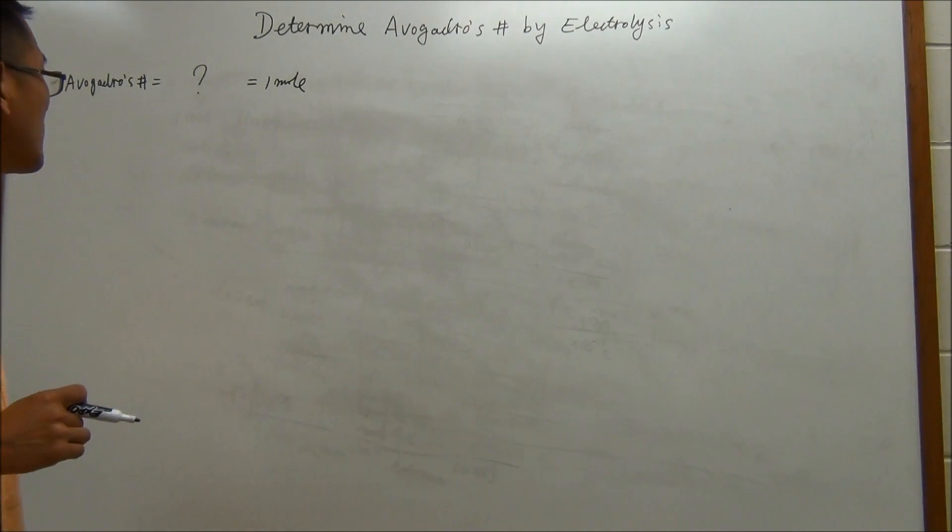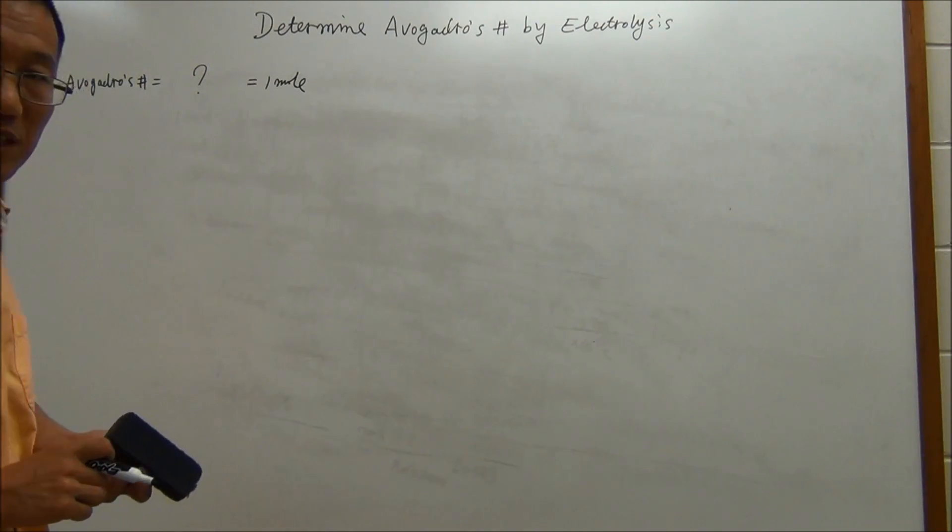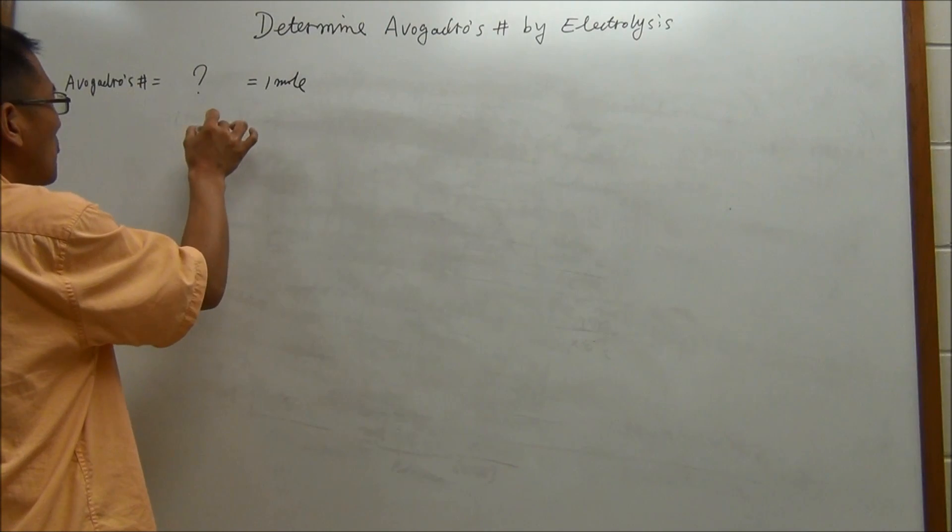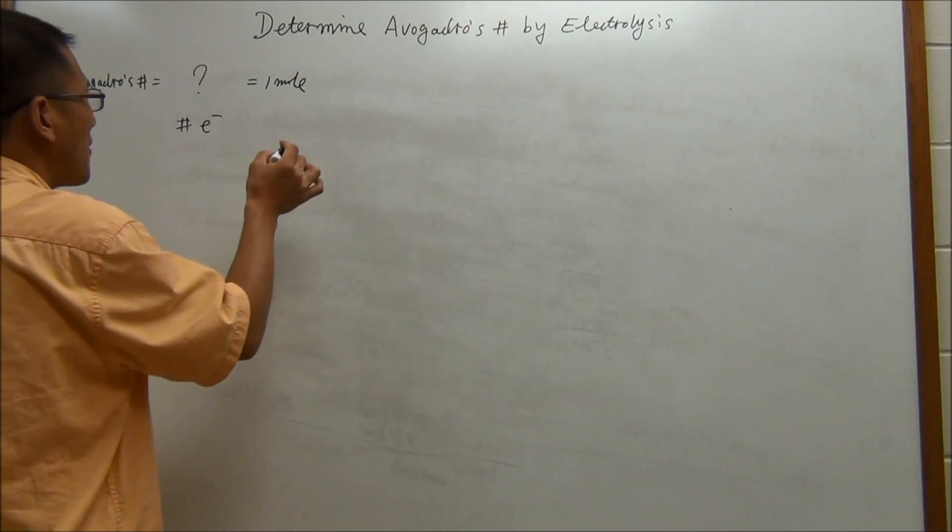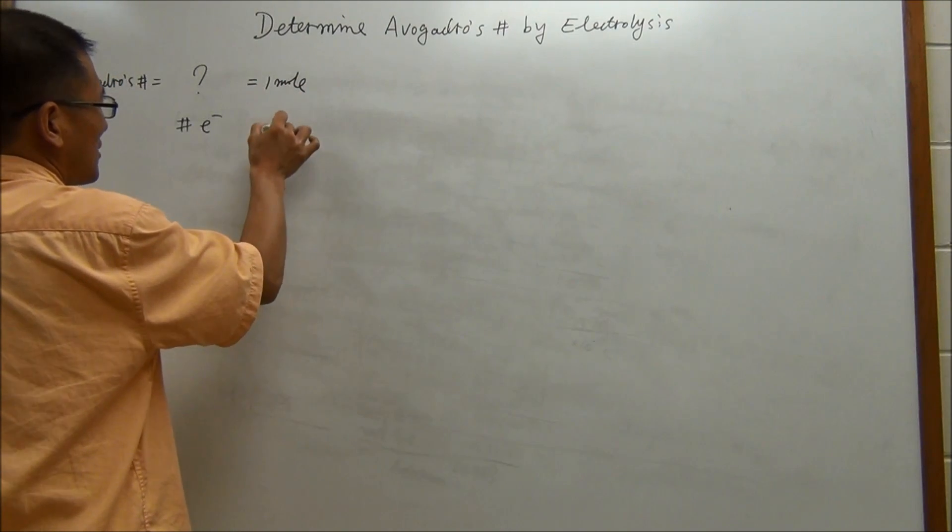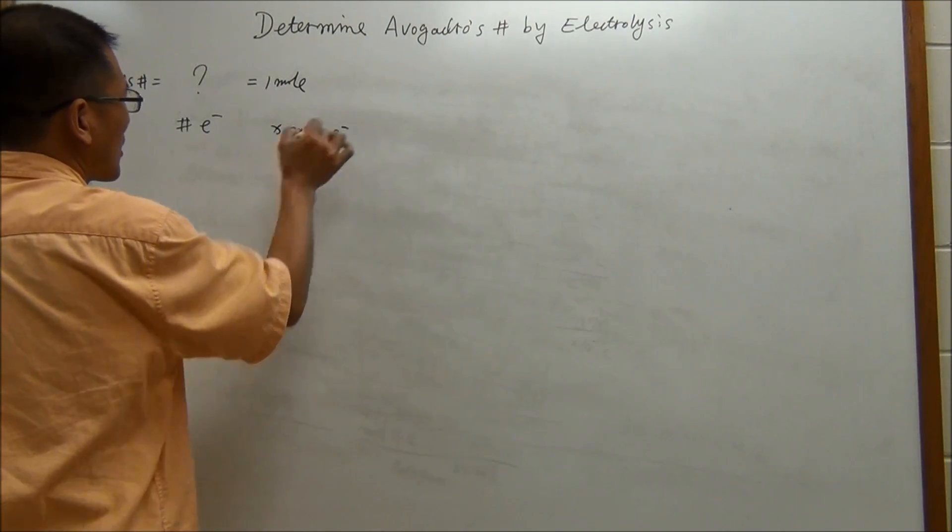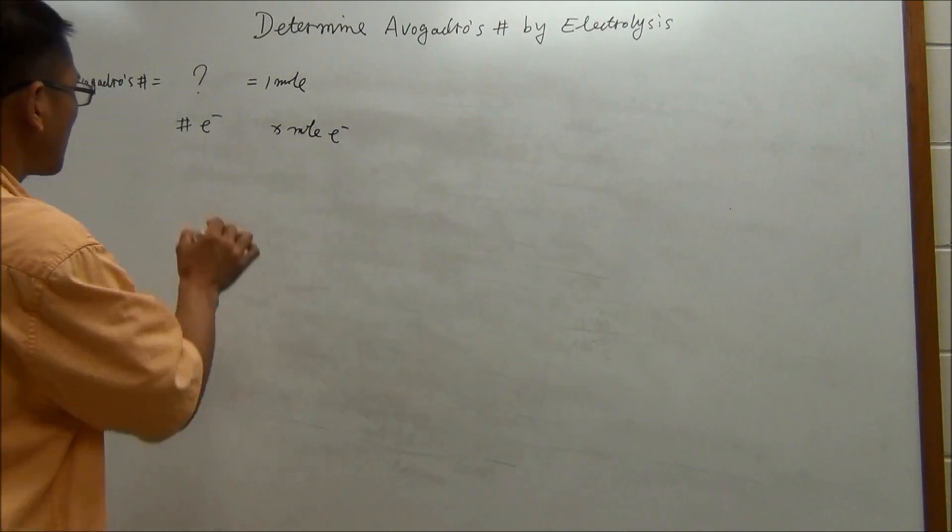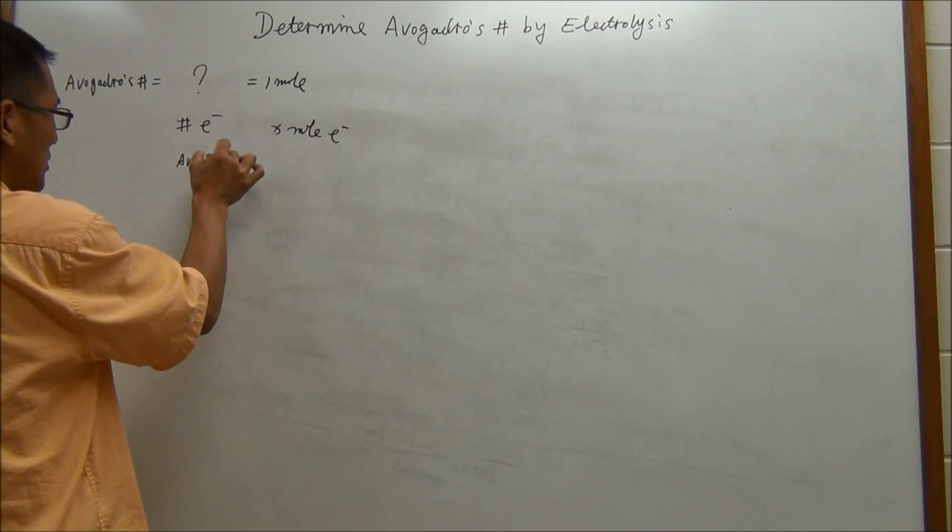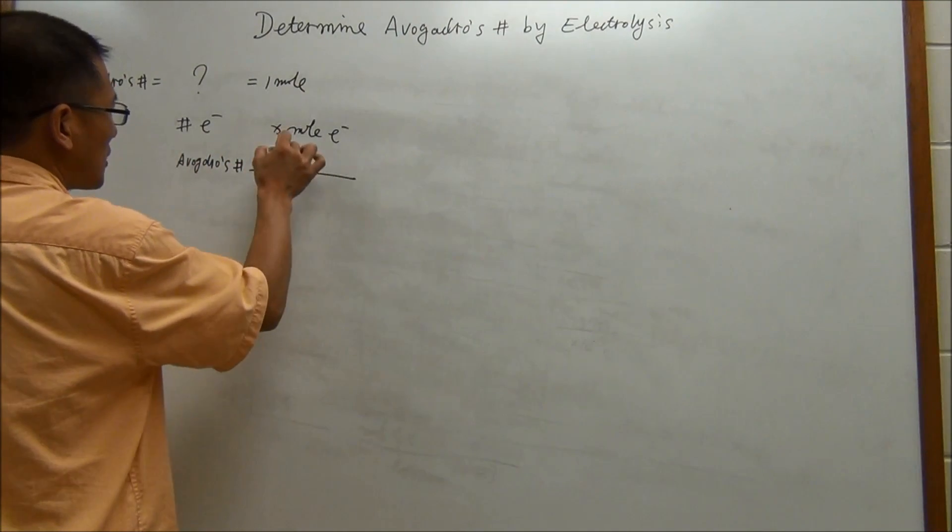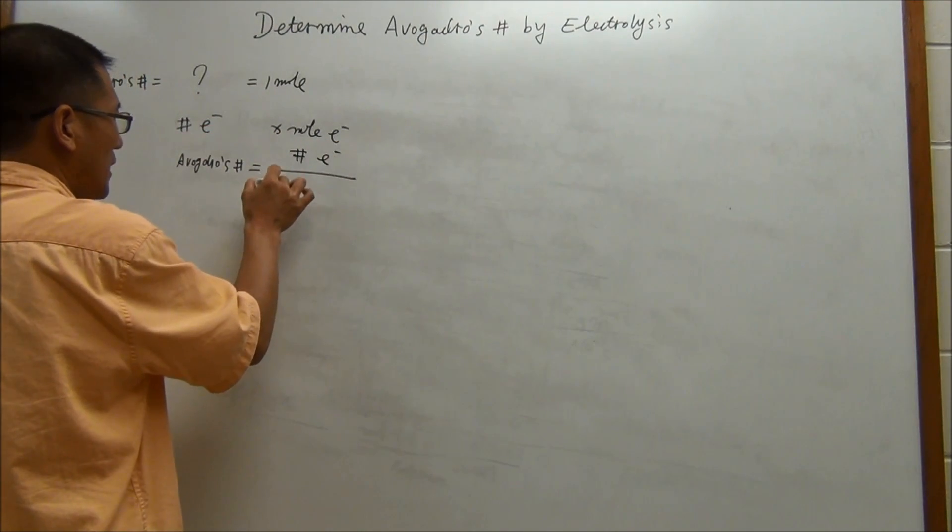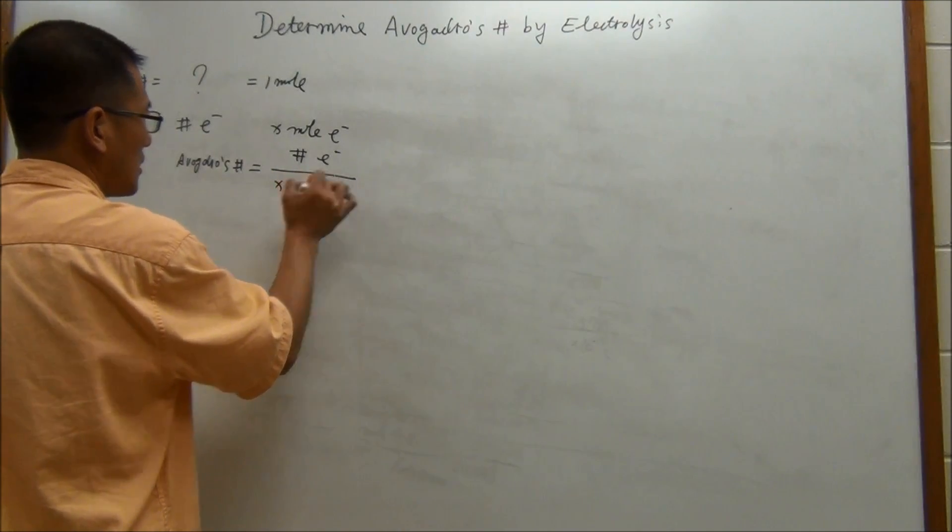The experimental method: if we can count the number of electrons, and then if you know how many moles of electrons, then we should be fine. In this case, Avogadro's number would be equal to the number of electrons divided by the moles of electrons.